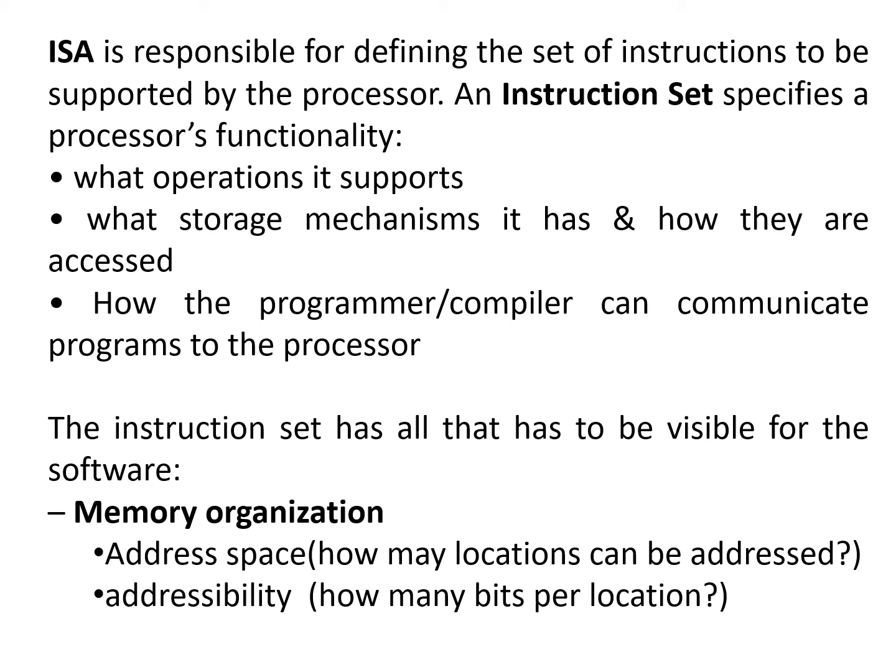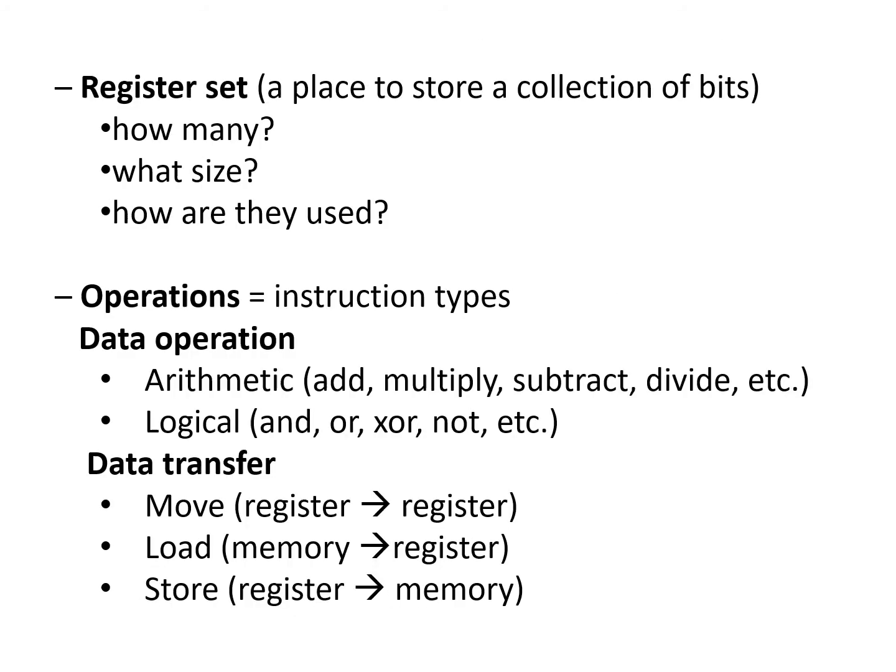The first element visible to software is memory organization: it consists of the address space — how many locations can be addressed — and addressability, meaning how many bits per location. Then there is the register set: registers are places to store a collection of bits, and the ISA specifies how many registers are supported, what size they are, and how they are used. Next are the operations or instruction types — what types of instructions are supported by the particular processor.